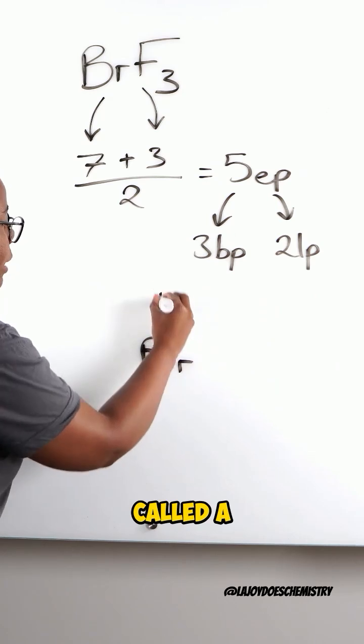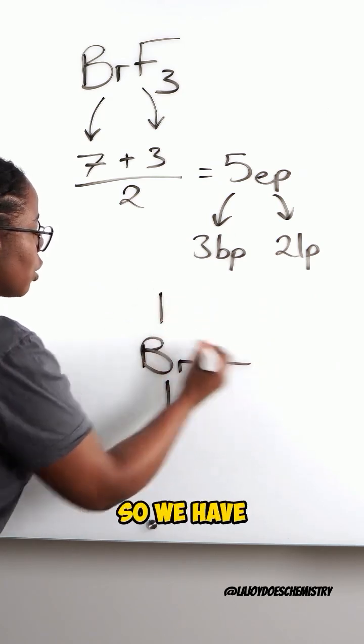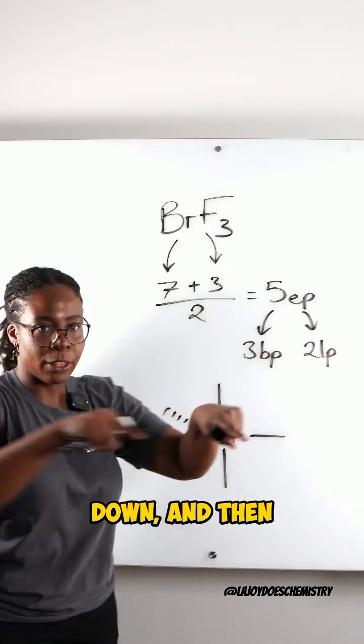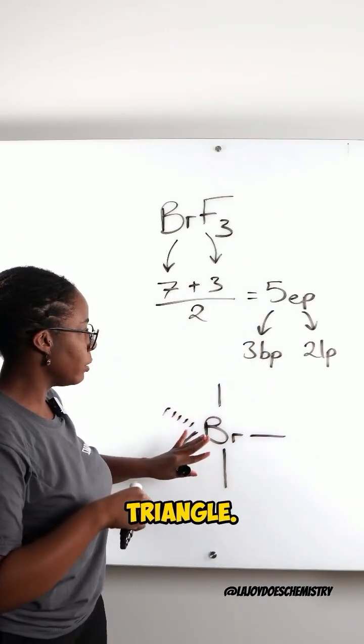When we have 5 electron pairs in total, the shape is based off of what's called a trigonal bipyramid. So, we have 1 bond going up, 1 going down and then 3 around the middle like a triangle.